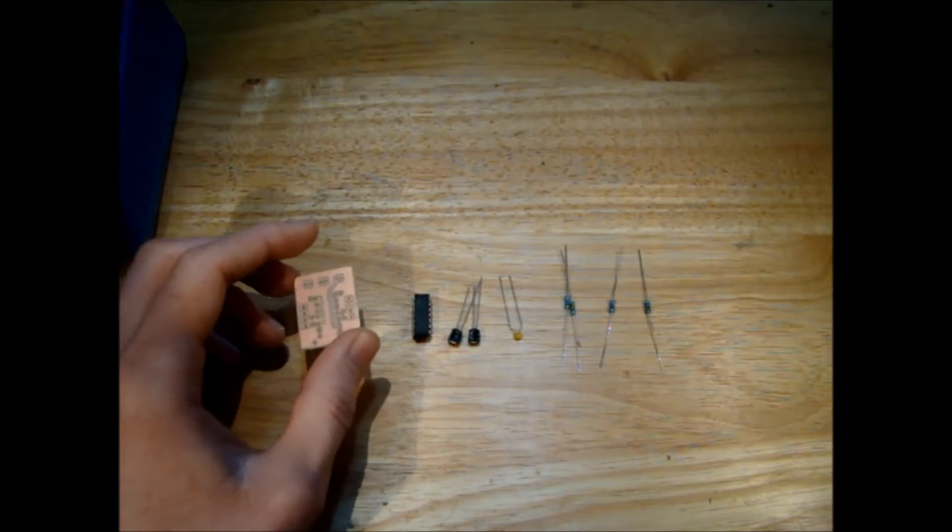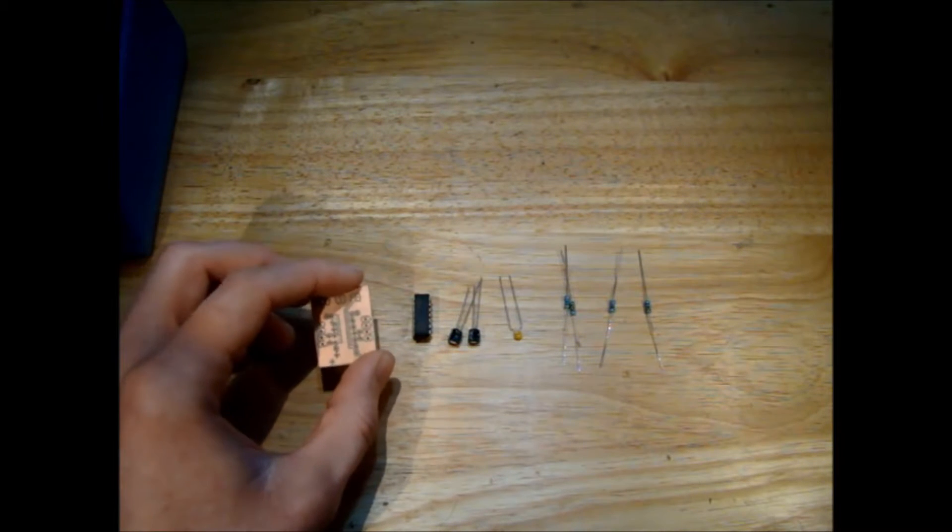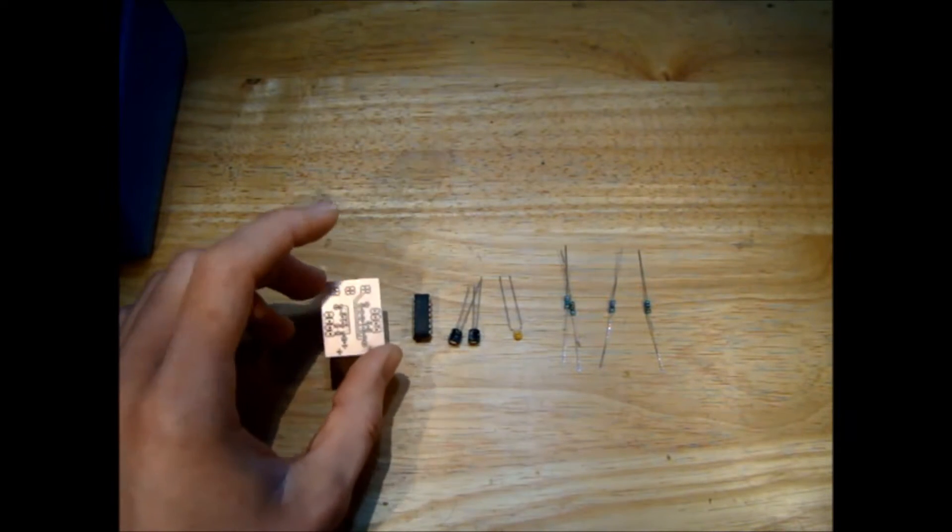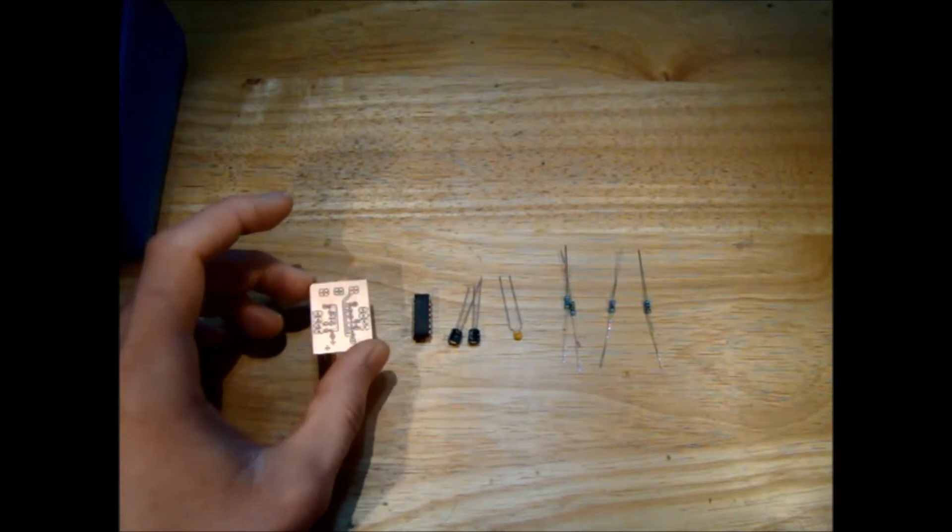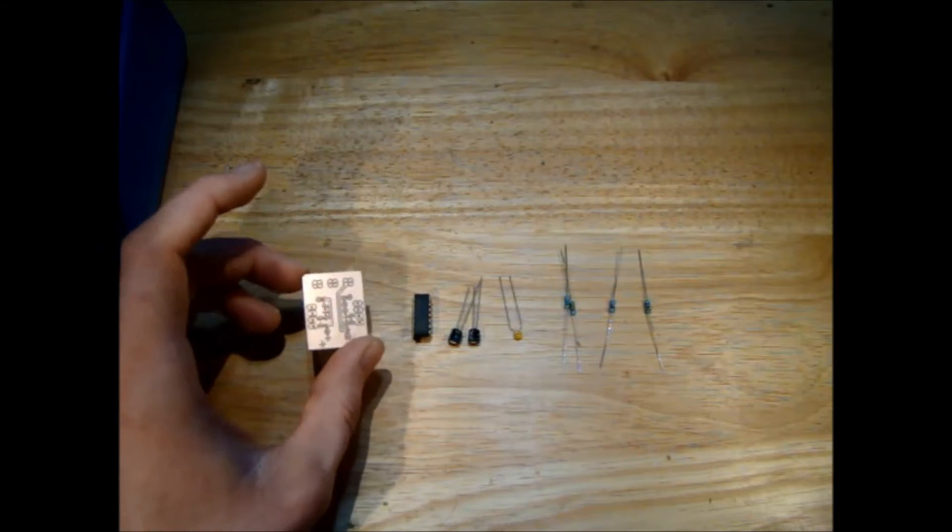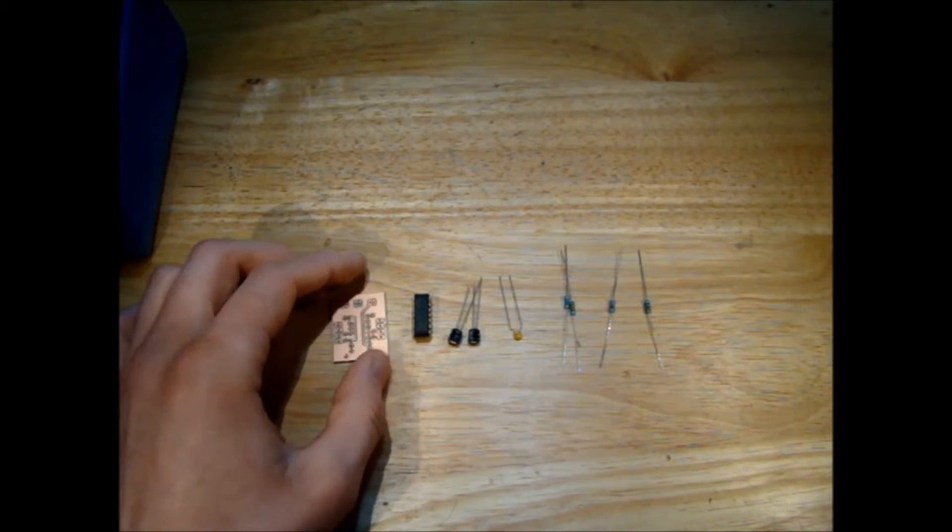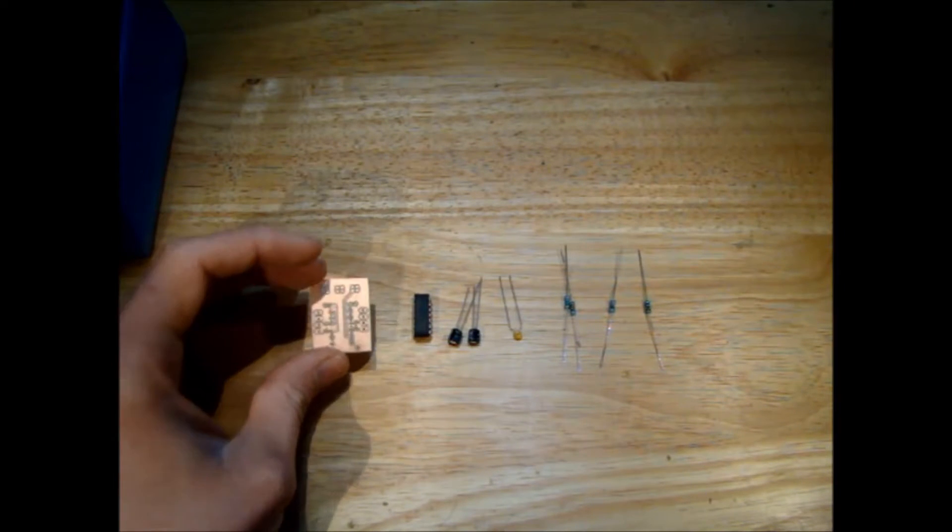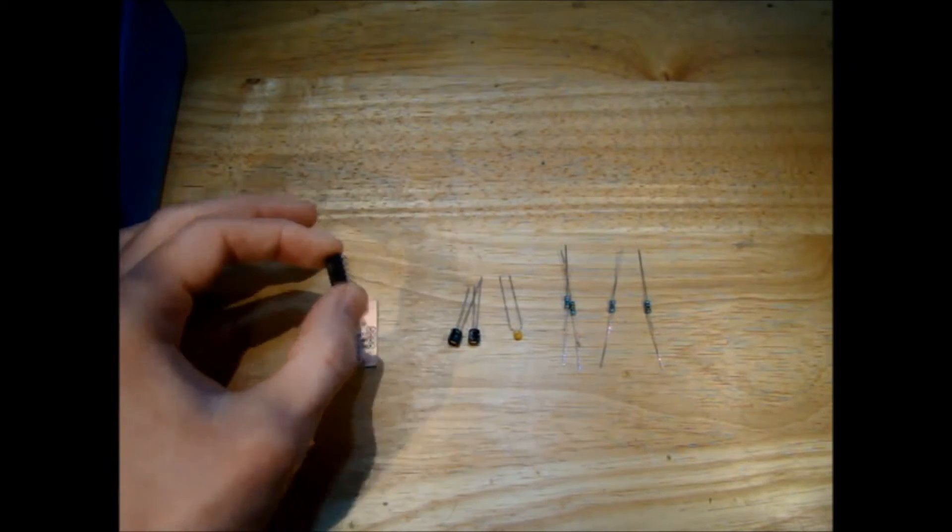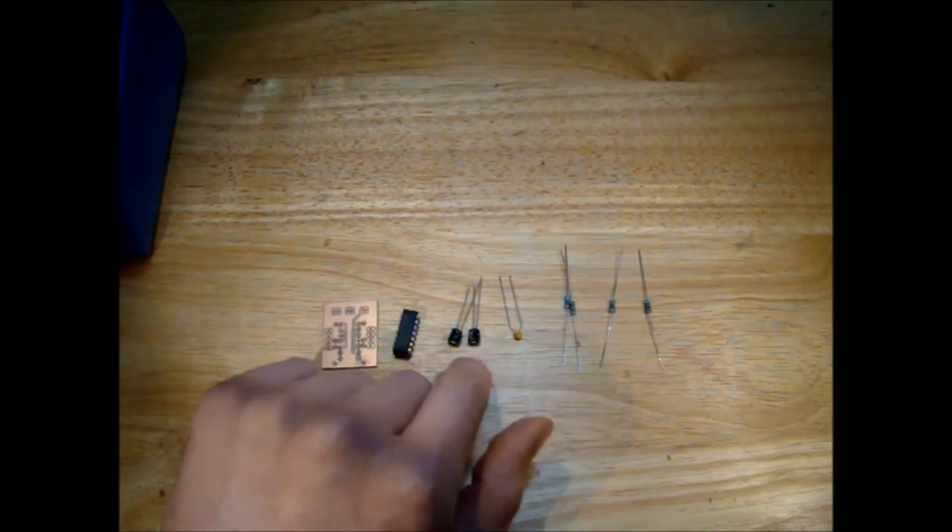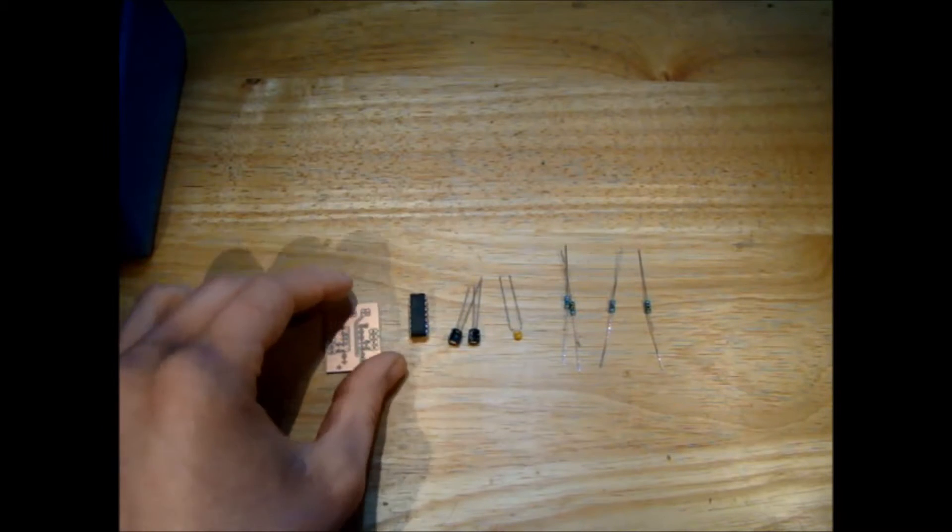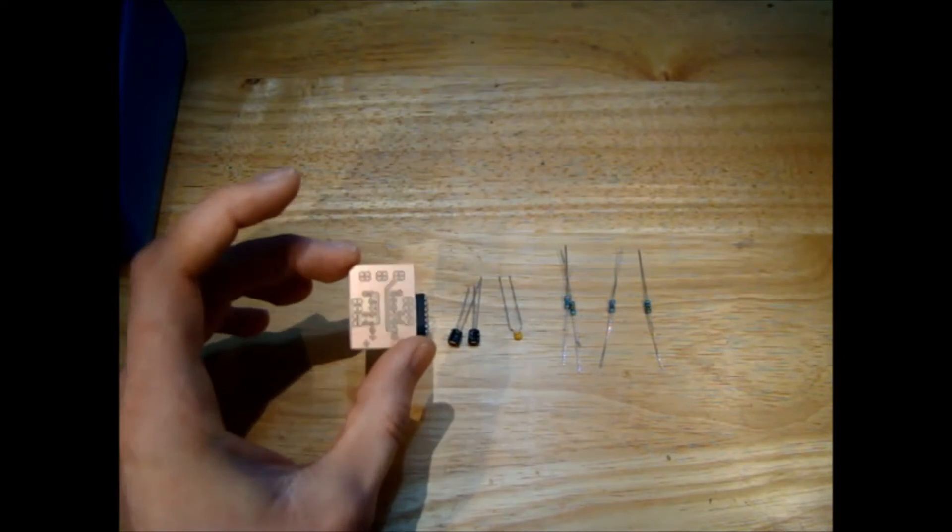After the previous video you guys seemed to want a board that was either a kit form so you got the board and the different components, or you just bought the board and you could find the components for yourself. That seemed to be what you guys wanted so I designed this. The benefit to just buying the PCB will be that you can choose the different components yourself, so you could change these capacitors and resistors to give different frequencies if you wanted them.